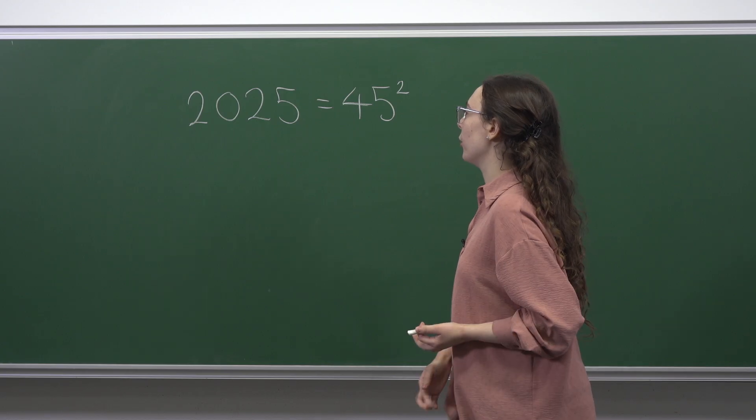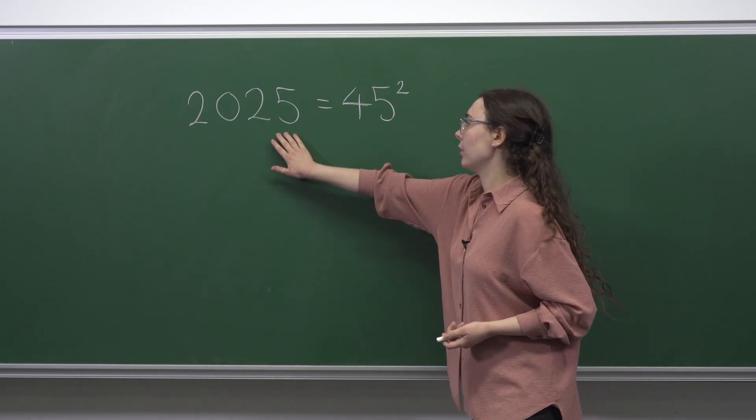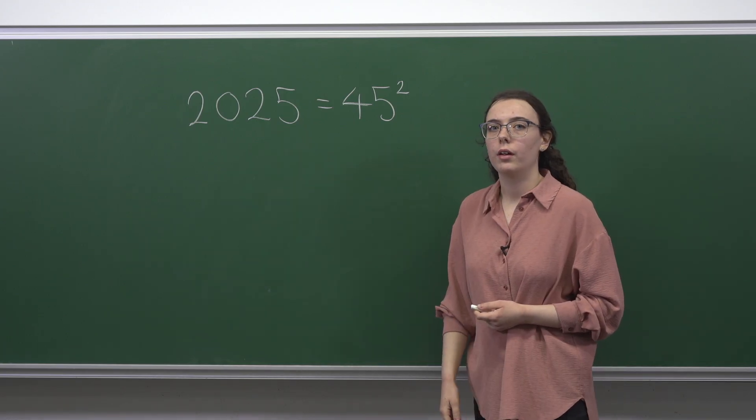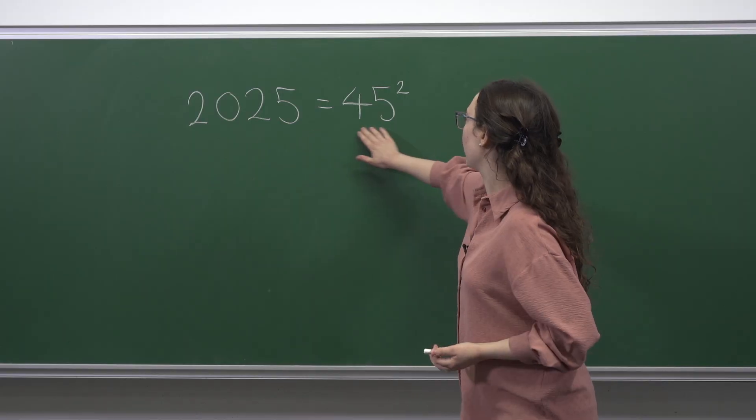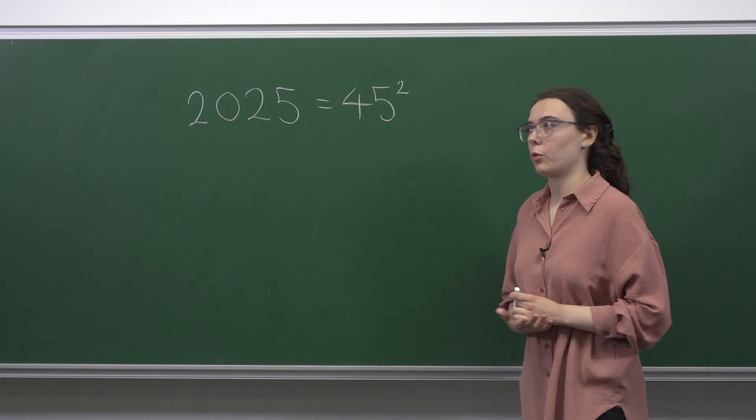So in this question we want to know the number of squares which are a factor of 2025. Now you may know that 2025 is 45 squared and that's going to help us a lot in this question.